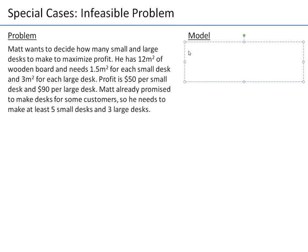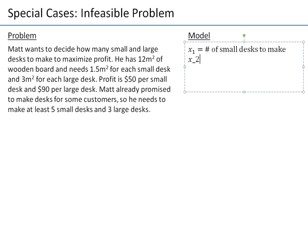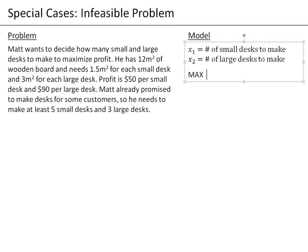So what would be the model here? Matt needs to decide the number of desks of each type to produce. So x1 will be the number of small desks to make, and x2 will be the second decision variable — the number of large desks to make. The profit can be calculated as $50 for each small desk times x1, plus $90 for each large desk times x2 — profit in dollars.